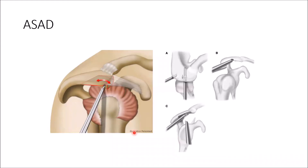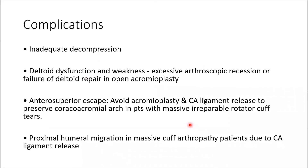The surgical diagram shows how the recession is performed arthroscopically: you burr the inferior part of the anterior portion of the acromion to create a recession, increasing the subacromial space. Complications include inadequate decompression and deltoid dysfunction when done via open acromioplasty, and anterior-superior escape. For patients with massive irreparable rotator cuff injury, you should avoid acromioplasty or coracoacromial ligament release to preserve the coracoacromial arch.